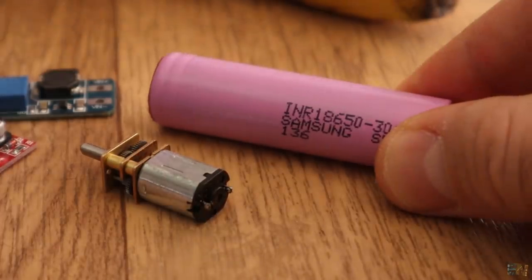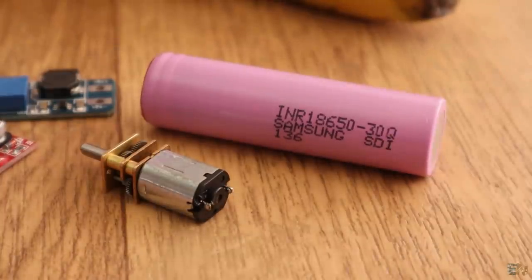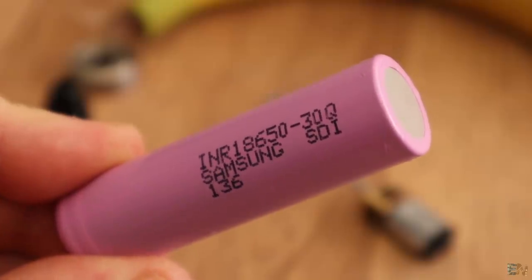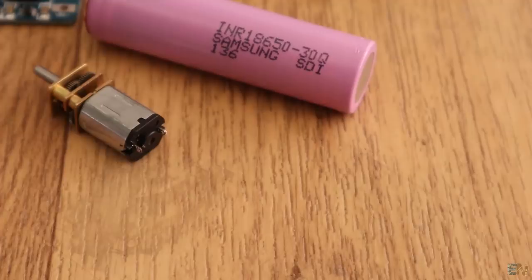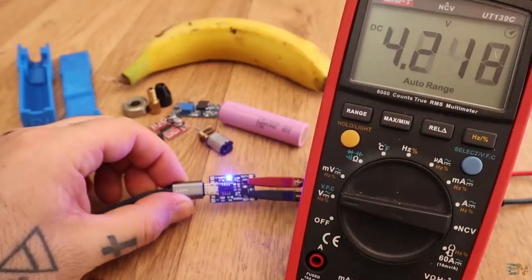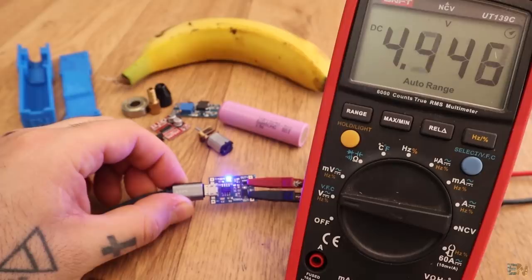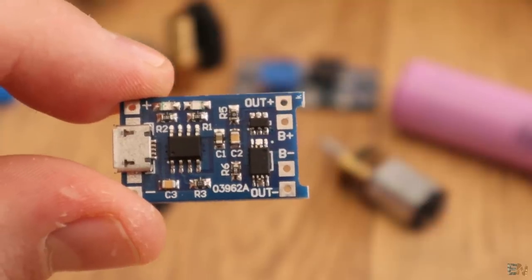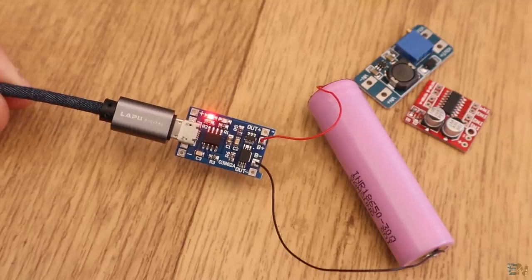To power the circuit, I will need a lithium-ion battery. This is an 18650 battery. To charge up this battery, I will use this USB module. This will output 4.2V, which is the charging voltage for the battery, and it will protect it from overcharge and over-discharge.